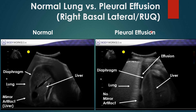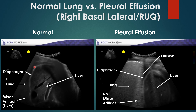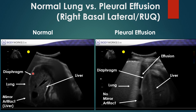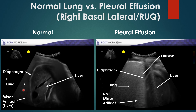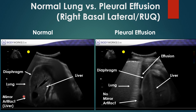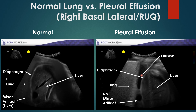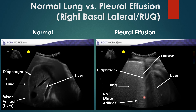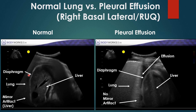Looking at consolidation versus effusion in the right basal lateral or right upper quadrant imaging, with the probe in the right lateral base position, you see lung, diaphragm, and liver. Normally, the sound wave bounces off the diaphragm into the liver and lung, producing a mirror artifact of the liver transmitted back to the transducer. With a pleural effusion, you have an anechoic region of fluid above the diaphragm, and no mirror artifact because fluid doesn't bounce the liver image back to the probe.